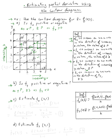Now Question C: we need to estimate f_x of (2, 1). Remember, this is the formula for the partial derivative with respect to x — we're adding some h to the x value and keeping y constant. So we're estimating f_x of (2, 1), which equals f of (2 plus h, 1) minus f of (2, 1) over h. The point (2, 1) is right here on the diagram.